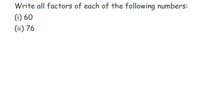Here's a question on factors: write all factors of each of the following numbers. We have two numbers — the first one is 60, the second one is 76. Factors are basically which numbers a given number goes into — for example, 60 goes in the 2, 3, and 4 tables, so 2, 3, and 4 all become factors of 60. We can also say all those numbers by which 60 gets properly divided with remainder zero are the factors of 60.